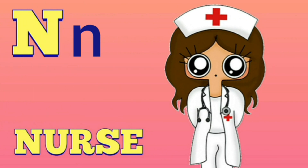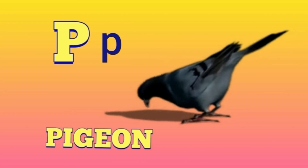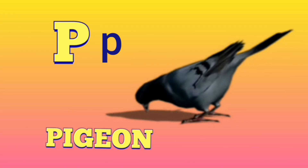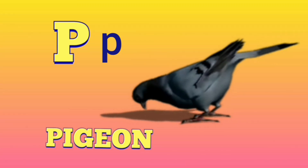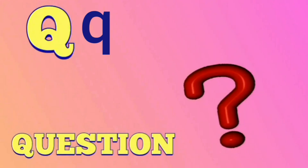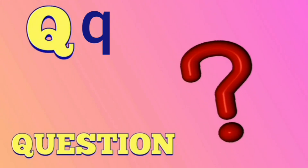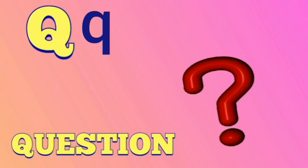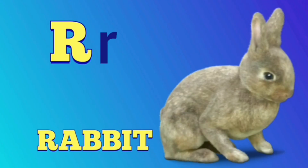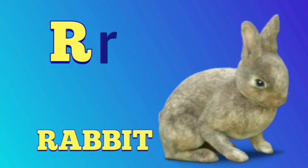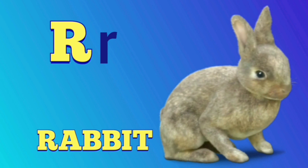O is for ocean - o o - ocean. P is for pigeon - p p - pigeon. Q is for question - q q - question. R is for rabbit - rabbit.